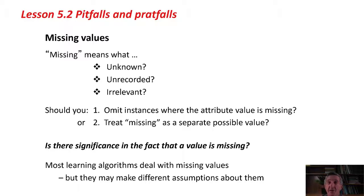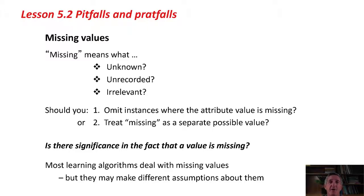Another thing I haven't told you about in this course so far is missing values. In real data sets, it's very common that some data values are missing — they haven't been recorded, they might be unknown, we might have forgotten to record them, or they might be irrelevant. There are two basic strategies for dealing with missing values: you can omit instances where the attribute value is missing, or you can treat missing as a separate possible value.